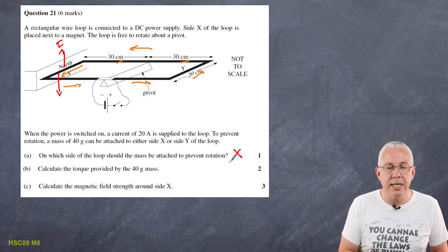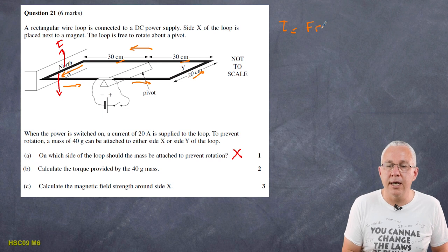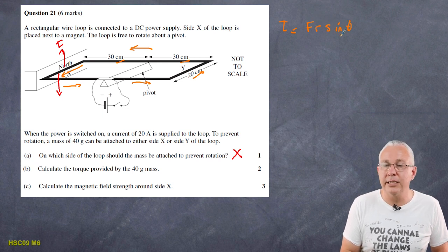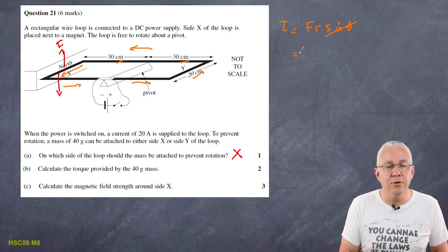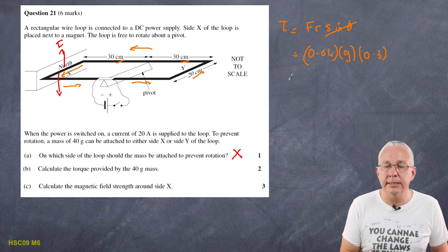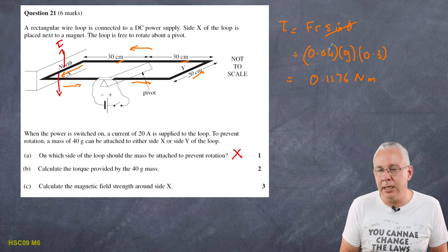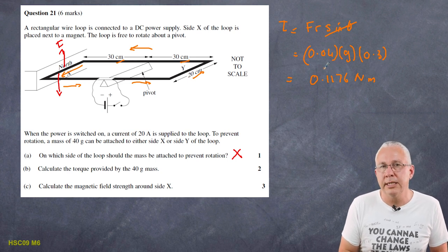Calculating the torque provided by the 40 gram mass: torque = F × r (sine theta = 1 since angle is 90°). Force is the weight: 0.04 kg × 9.8 m/s² × r. The radius r = 0.3 m. Torque = 0.04 × 9.8 × 0.3 = 0.1176 N·m. This is worth two marks — one for the correct formula and one for correct SI unit substitution. Students often lose marks by not converting to SI units.